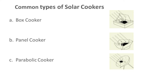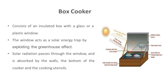The common types of solar cookers are box cookers, panel cookers, and parabolic cookers. The box cooker consists of an insulated box with a glass or plastic window. The window acts as a solar energy trap by exploiting the greenhouse effect. Solar radiation passes through the window and is absorbed by the walls, the bottom of the cooker, and the cooking utensils.